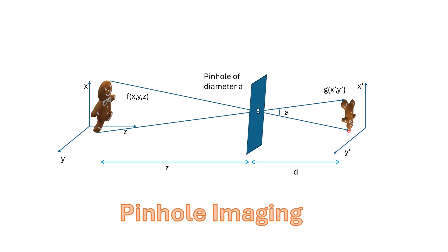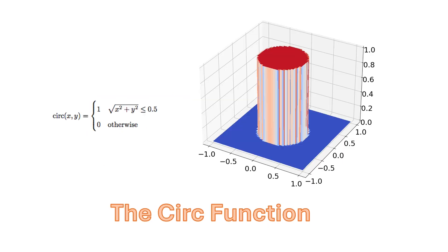We can create a forward model for this relatively simple system. Let's begin by describing the pinhole. Let's say that it's a circular pinhole, so that the transmittance of the function is defined by this circ function. If the radius is less than 0.5, then the transmittance of the circ function is 1, and if it's greater than 0.5, the transmittance is 0.